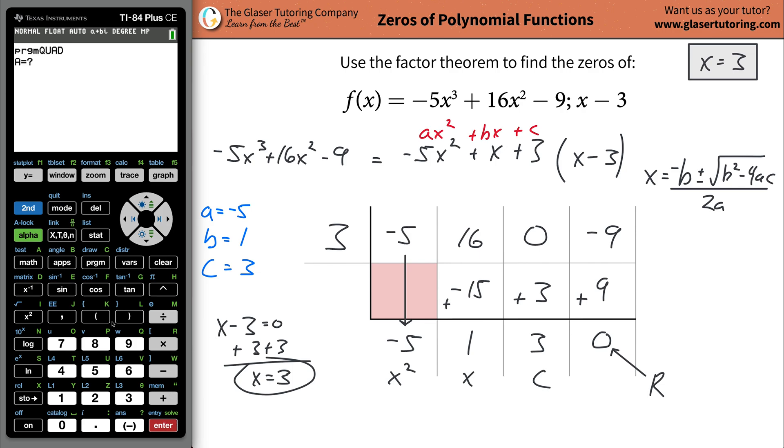I'm going to run the quadratic program. I'm going to put in my A value, which is negative five. I'm going to put in my B value, which is one. I'm going to put in my C value, which is three, and then hit enter and up. There it is. There it is. So now those are the values. Those are the other two values. Those are the other two zeros.